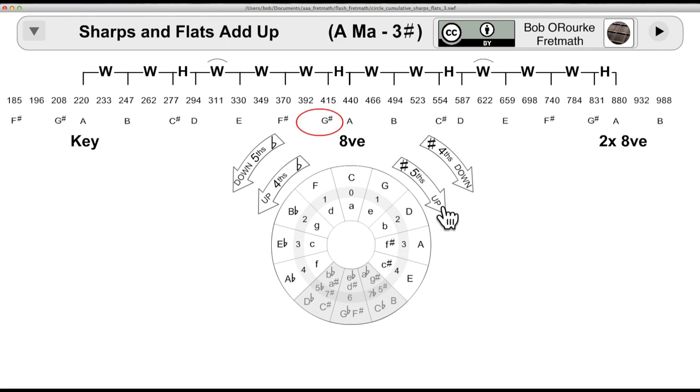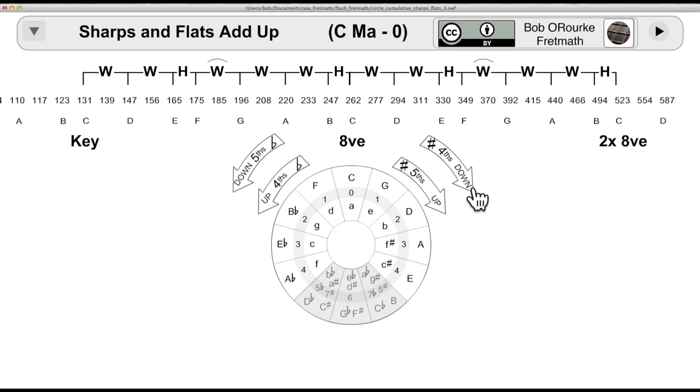You can go up by fifths or down by fourths or any combination you want. You're always going to add a sharp to the seventh degree to keep the major scale pattern. Going down a fourth from A to E, you get the D has to be sharped. That's enough sharps for me for now.